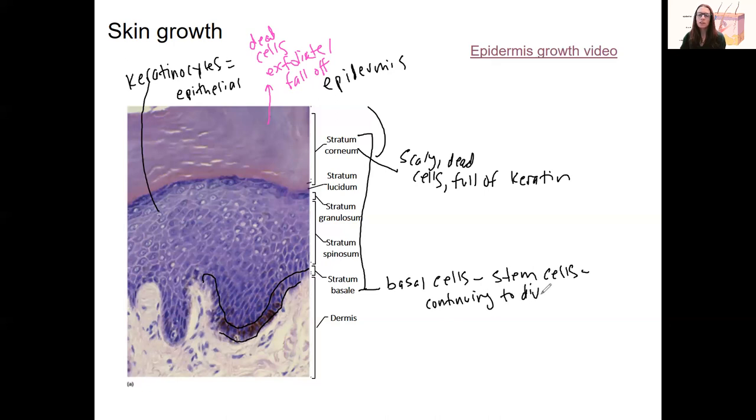And that is unlike many of your cells, which have differentiated and no longer can divide. Once a cell differentiates, it is no longer able to go through mitosis. That's what this is called.